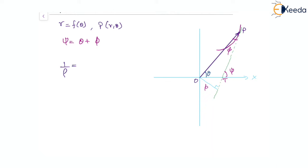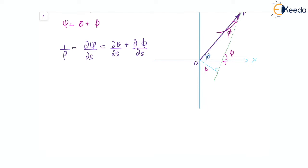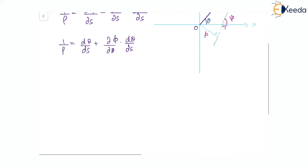As we know that 1/ρ is given by dψ/ds, replacing ψ by φ + θ, this becomes dθ/ds + dφ/ds. We can find a relation for φ in terms of θ, so: 1/ρ = dθ/ds + (dφ/dθ)·(dθ/ds), and taking dθ/ds common, we have 1/ρ = (dθ/ds)·(1 + dφ/dθ). This is equation number 1.